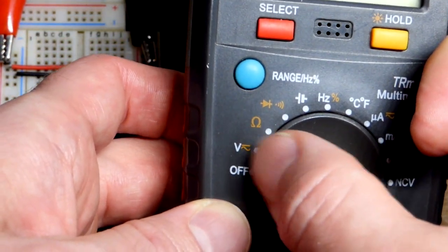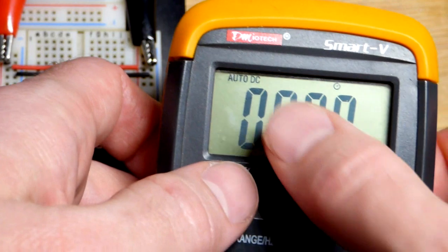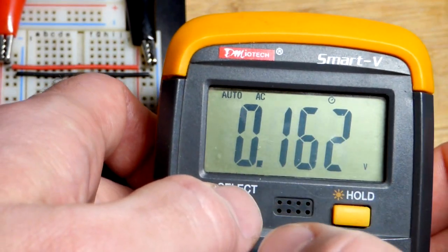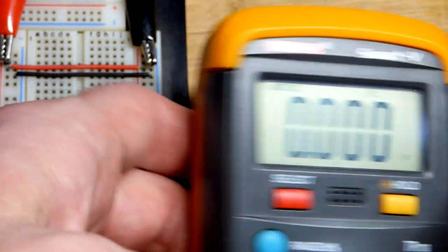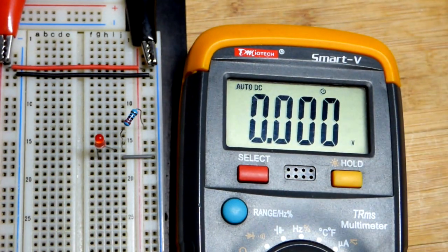That little symbol there means we can hit the select button to change it for measuring AC or DC. We want DC for this video.